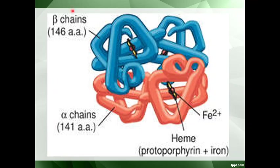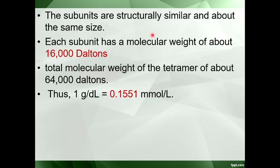The beta chain has 146 amino acids and the alpha chain has 141 amino acids. There is a heme group and the red spot is the iron. The subunits are structurally similar and about the same size. Each subunit has a molecular weight of about 16,000 daltons, making the total weight of hemoglobin 64,000 daltons. One gram per dL of hemoglobin is equal to 0.1551 millimoles per liter.